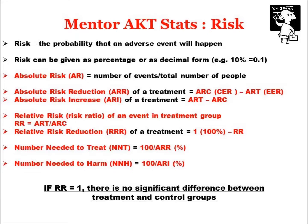Risk can be given as a percentage or as a decimal form, and it's worked out as the number of bad things that happen over the total number of people followed up. That's the absolute risk to an individual. If I apply a treatment, I have two groups: absolute risk in a control group and absolute risk in a treatment group. The absolute risk reduction is the control event rate minus the experimental event rate. However, treatments can also increase risk through their own adverse events, giving us an absolute risk increase — the ARI — given by ART minus ARC.